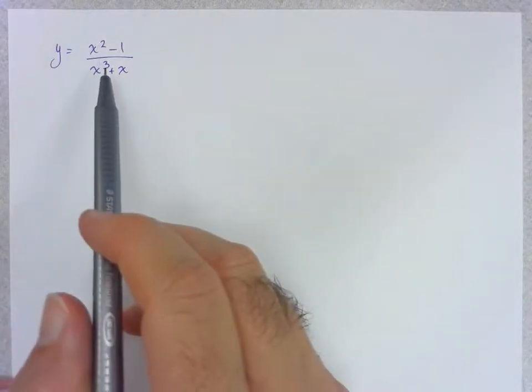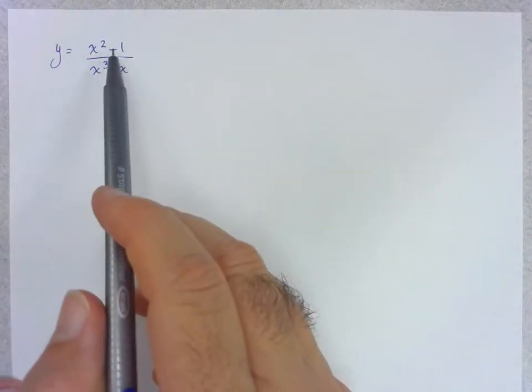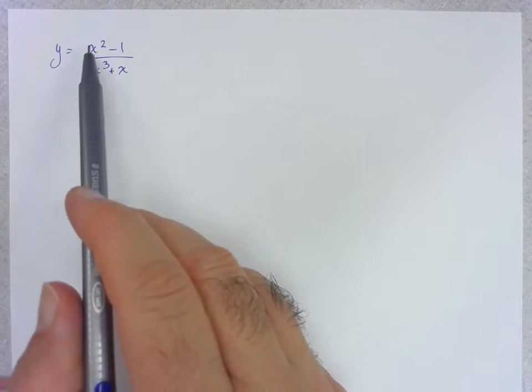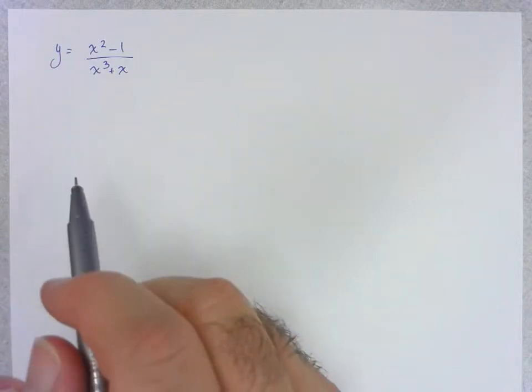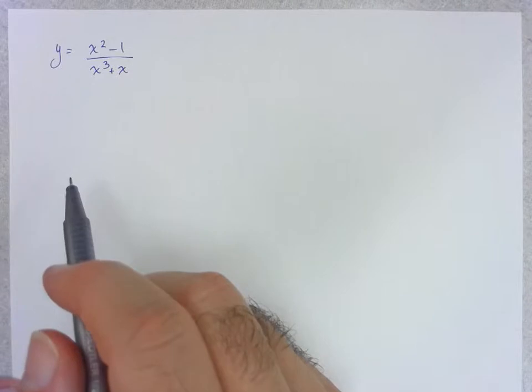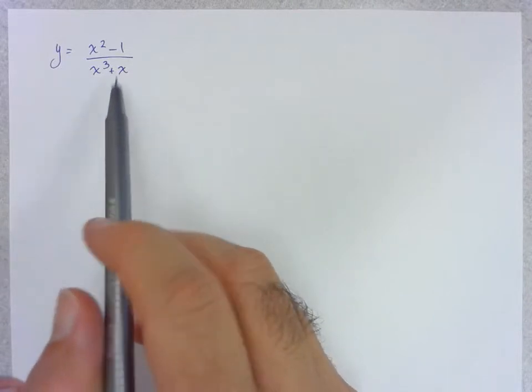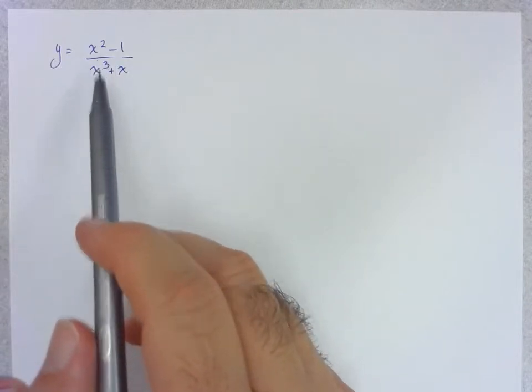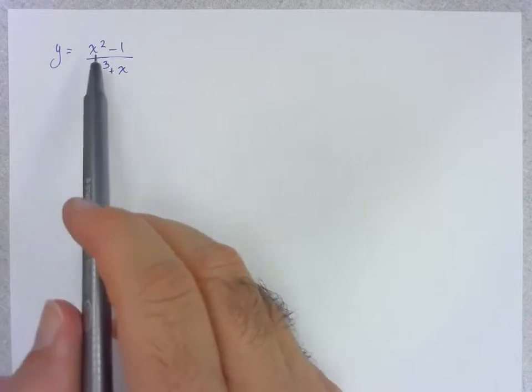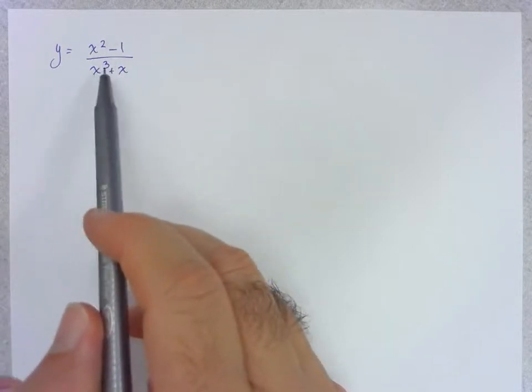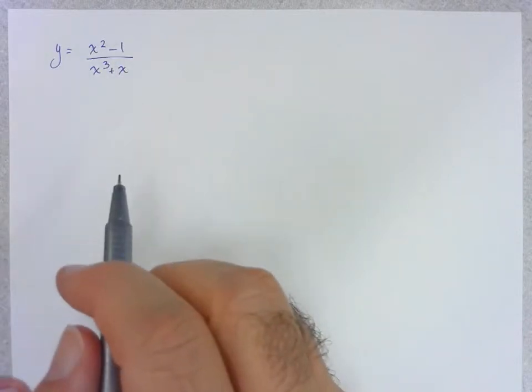But as a whole it can't be a polynomial function because we're allowing ourselves to divide by the variable. But as we usually try to do, can we determine things about these rational functions by looking at their individual components which are polynomial and which we know a lot about.